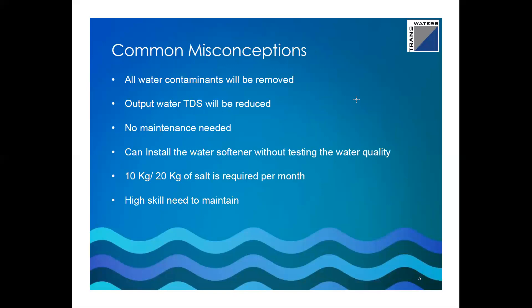There are many myths and misconceptions around water softeners. Myth one: all water contaminants will be removed. This is not true — a water softener is designed to remove only hardness-creating salts, calcium and magnesium carbonate. It will not remove nitrates, iron, fluoride, turbidity, smell, or color. That is why even if you have a softener, we still recommend having an RO system, because other contaminants will not be addressed by a water softener alone.